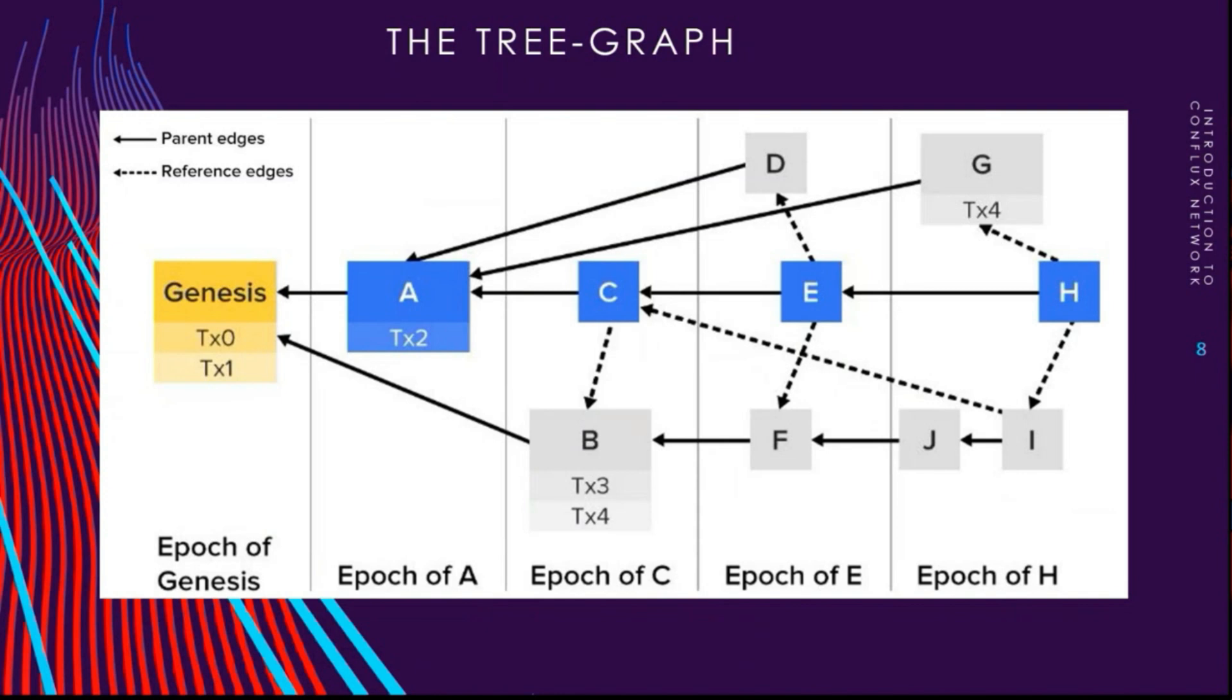Here you can see an image which is a representation of the tree-graph. At the heart of Conflux there is this tree-graph ledger structure and the GHAST selection rule. This structure is called the tree-graph. Each block not only has a single parent but it also keeps a list of all their references to previous blocks.